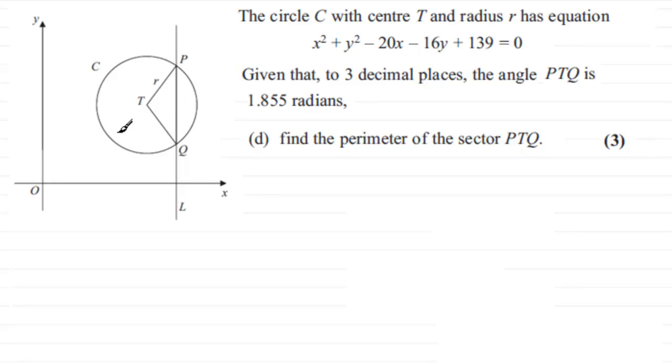If we can just mark it in, let's put that in there. That angle is 1.855 radians, and we're asked to find the perimeter of the sector PTQ. That's this distance all the way around here.